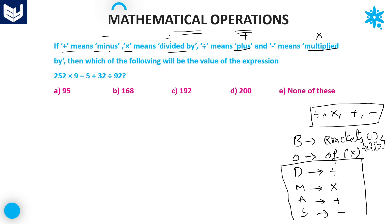You have to interchange the four mathematical operations. Into means divided by, so replace into with divided by. Minus means multiplied, so replace minus with multiplication. Plus means minus, so replace plus with minus. Divided by means plus, so replace divided by with plus. The new expression formed is: 252 divided by 9, into 5, minus 32, plus 92.